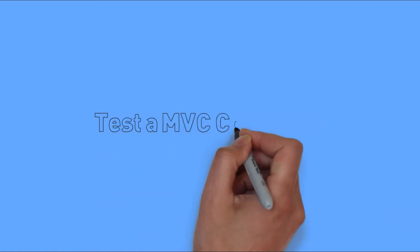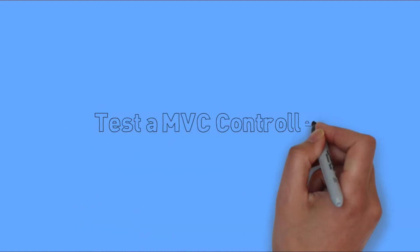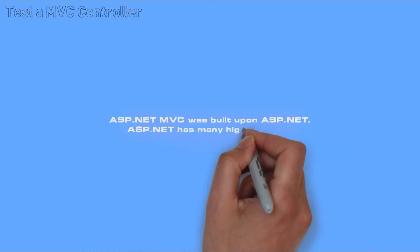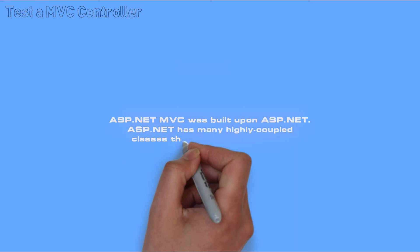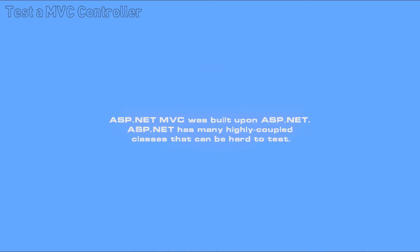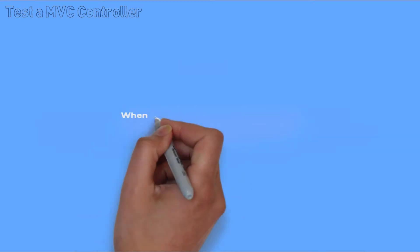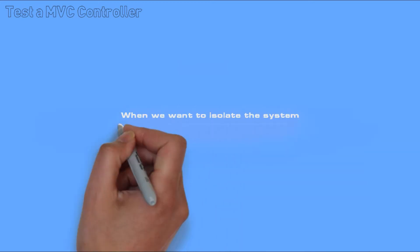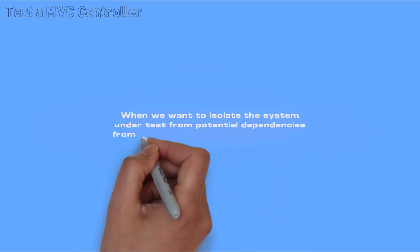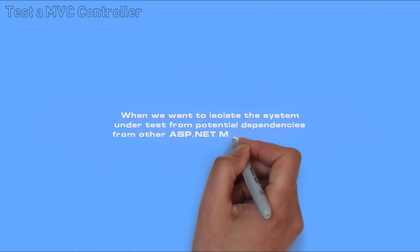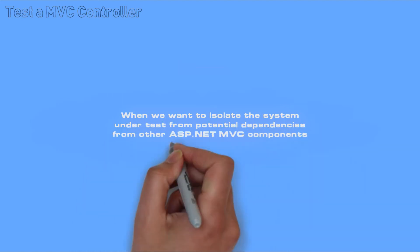Using fakes with ASP.NET MVC. ASP.NET MVC was built upon ASP.NET, which has many highly coupled classes that can be hard to test. Where we want to isolate the system under test from potential dependencies from other ASP.NET MVC components, we can use fakes.